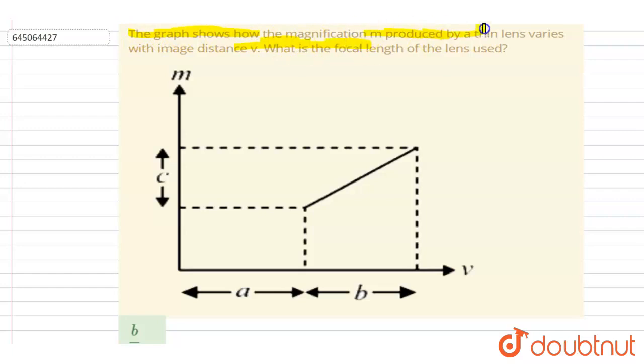the magnification m produced by a thin lens varies with the image distance v. What is the focal length of the lens used?